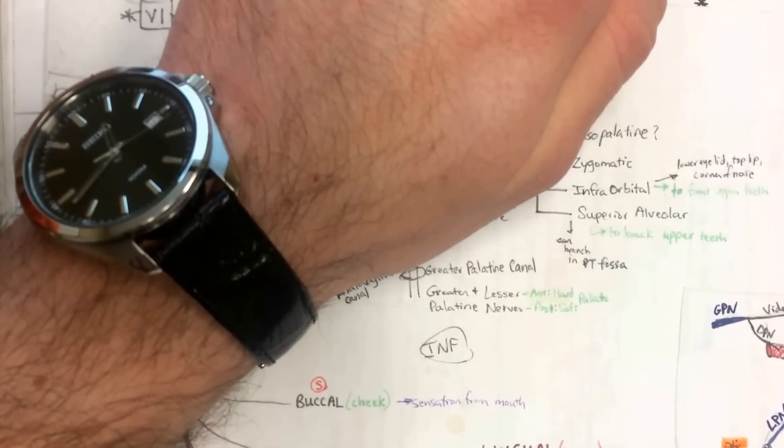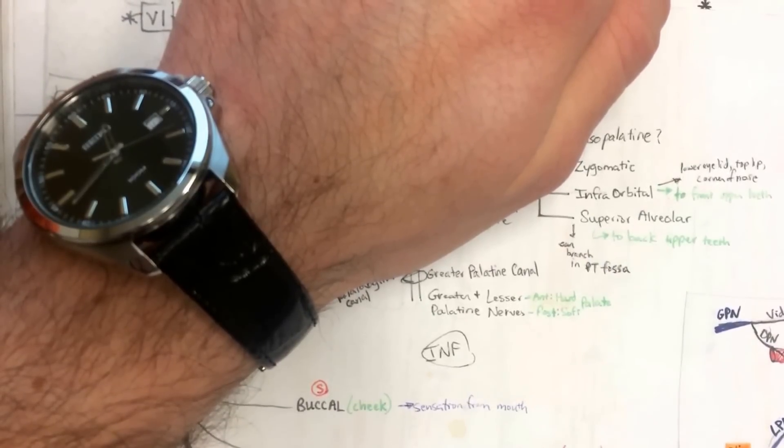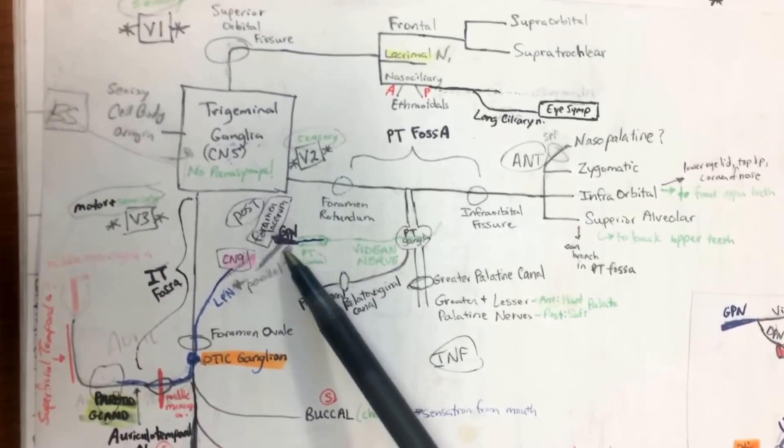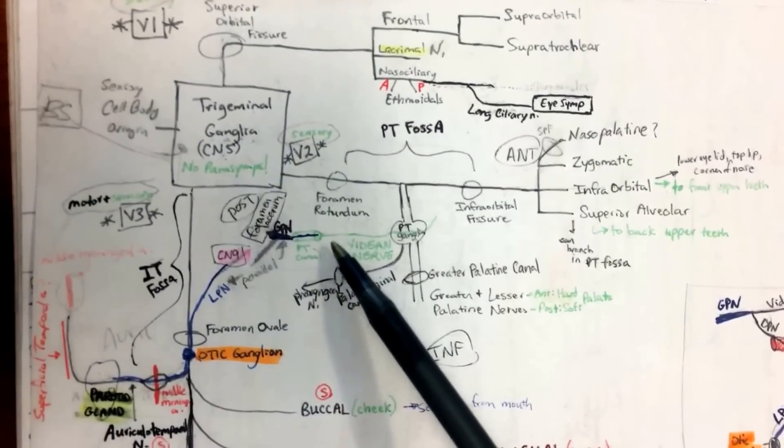Coming off of which petrosal nerve? Greater or lesser or deep? The greater petrosal. The greater petrosal joins with the deep. You're right.